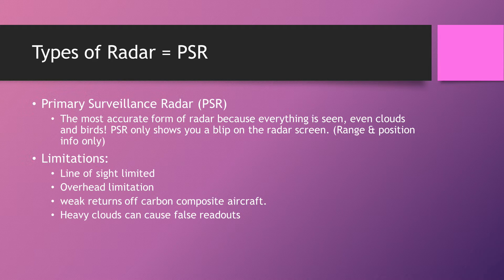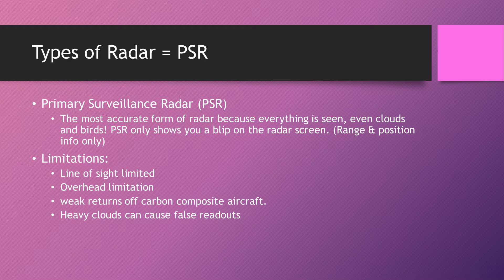PSR does have some limitations. It's line-of-sight limited, so if you're flying really low, the radar may miss you. Equally, if you're going overhead the radar, it doesn't point upwards so it won't see you there either — there will be blind spots. It also has weak returns from carbon composite aircraft, which is becoming more of an issue. Aircraft like the 787 use carbon composite materials and don't return a strong signal, making the radar less accurate. Arguably one of the biggest limitations is that it reflects absolutely anything — large flocks of birds or big rain-filled clouds will all show as blips, so you have to be careful distinguishing what's what.